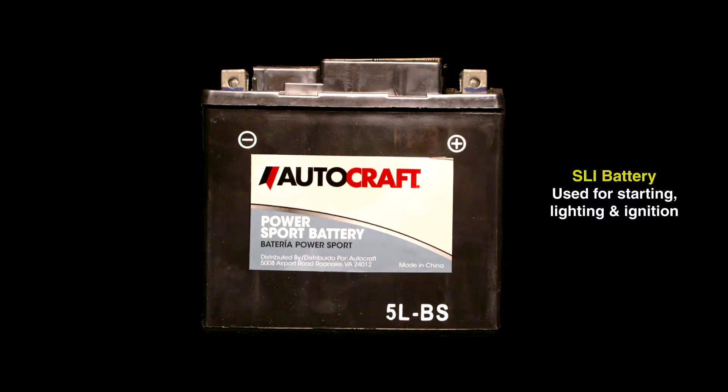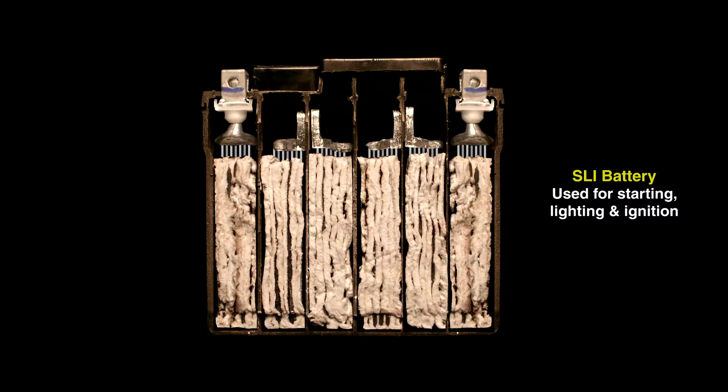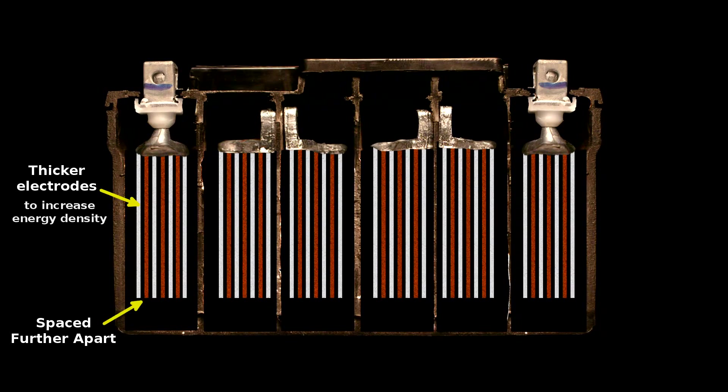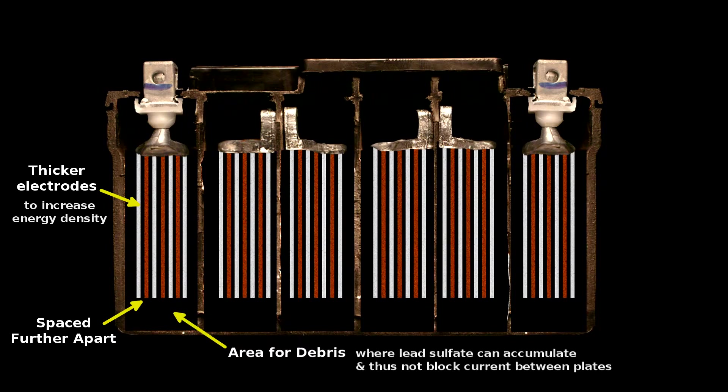To convert an SLI battery, like used to start a motorcycle or a car, into a deep cycle battery, we do three things. We use thicker electrodes to increase energy density, space them further apart so lead sulfate debris can fall off of them, and add room below where that debris can accumulate. The trade-off is that it's larger, heavier, and gives off a lower current than a car battery.